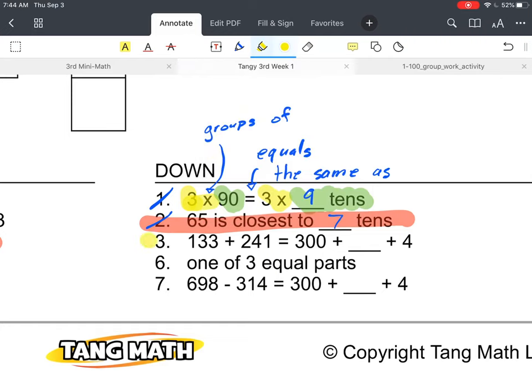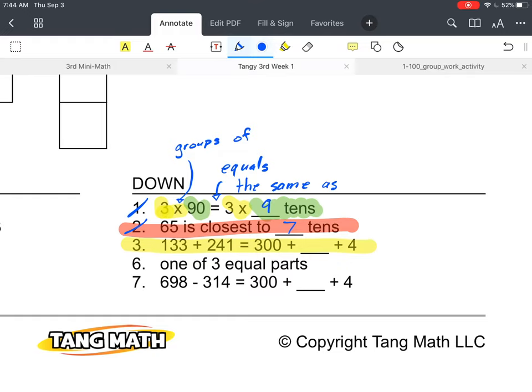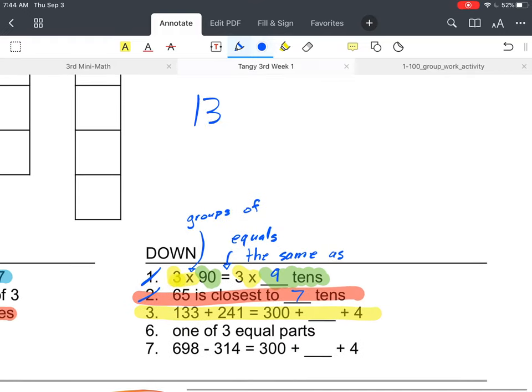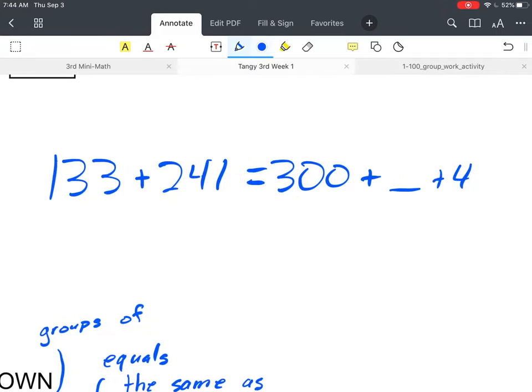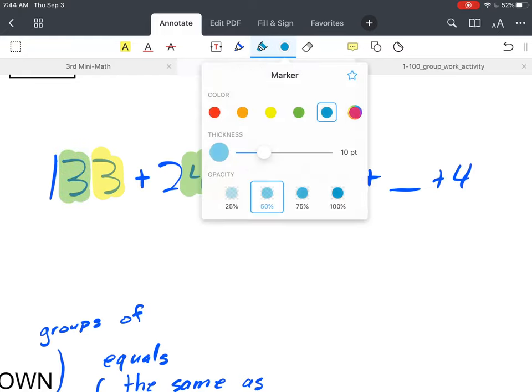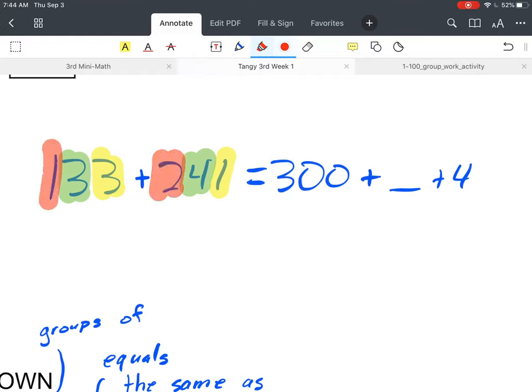And then on number three here, three down, this might look unusual to some people. So I'm going to show you that one real quick. It says 133 plus 241 is the same as 300 plus blank plus 4. So what we're doing here is your students are being trained to see this as ones, tens, and hundreds. So if we were to highlight each of these, here's our ones, then we have our tens, and then we have our hundreds. And so we have our hundreds, our tens, our tens,